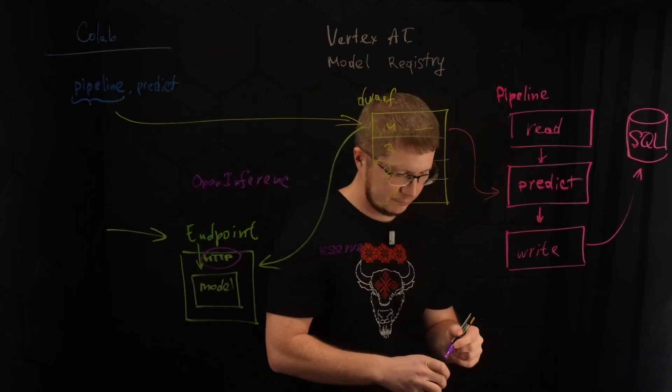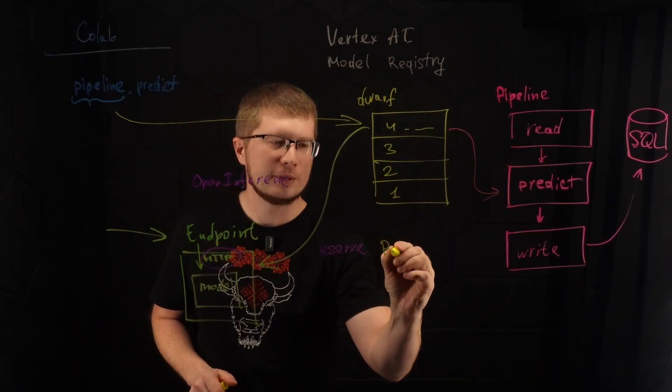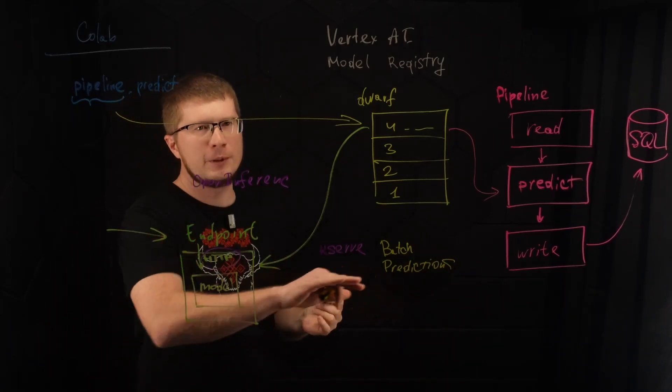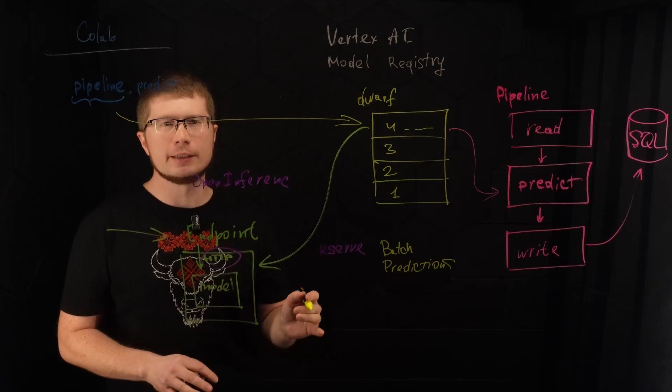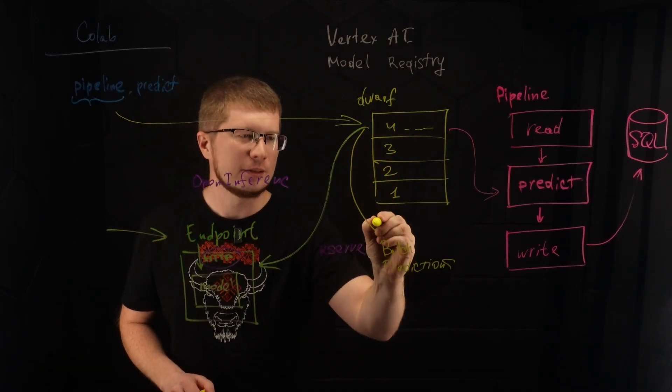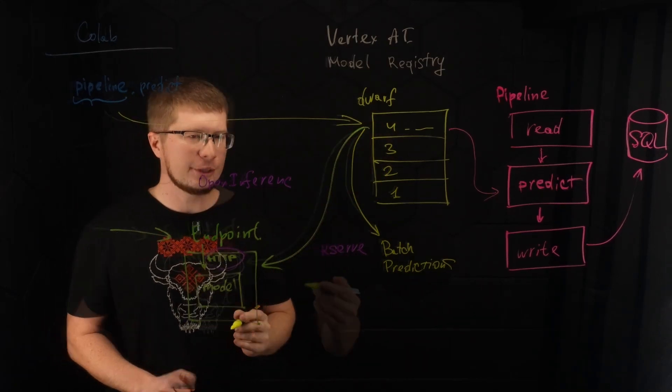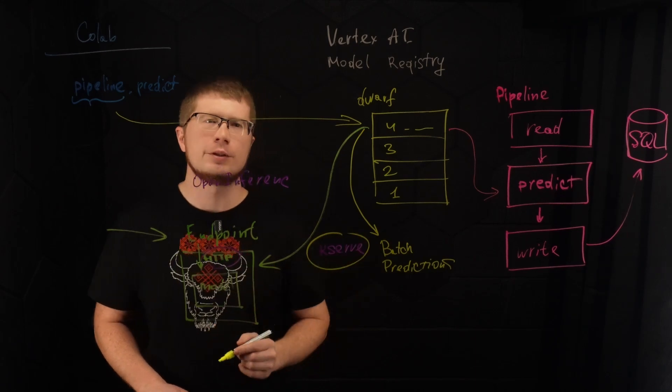One more. We can also have a batch prediction job. So batch prediction job, it's like an entity inside Vertex AI. You can see it in a web interface. And it also can use our model from model registry. And it also uses KServe format for the inference.